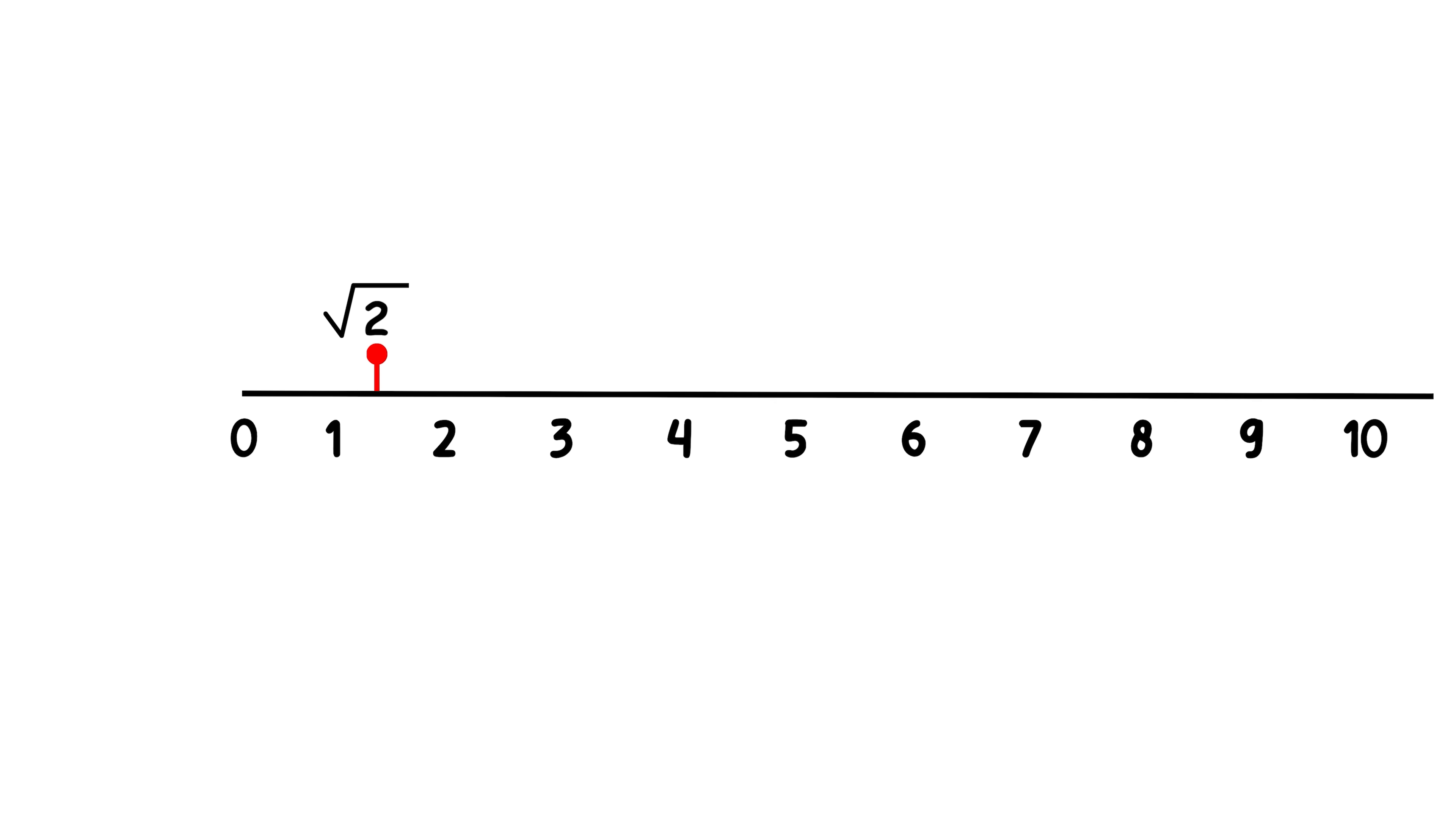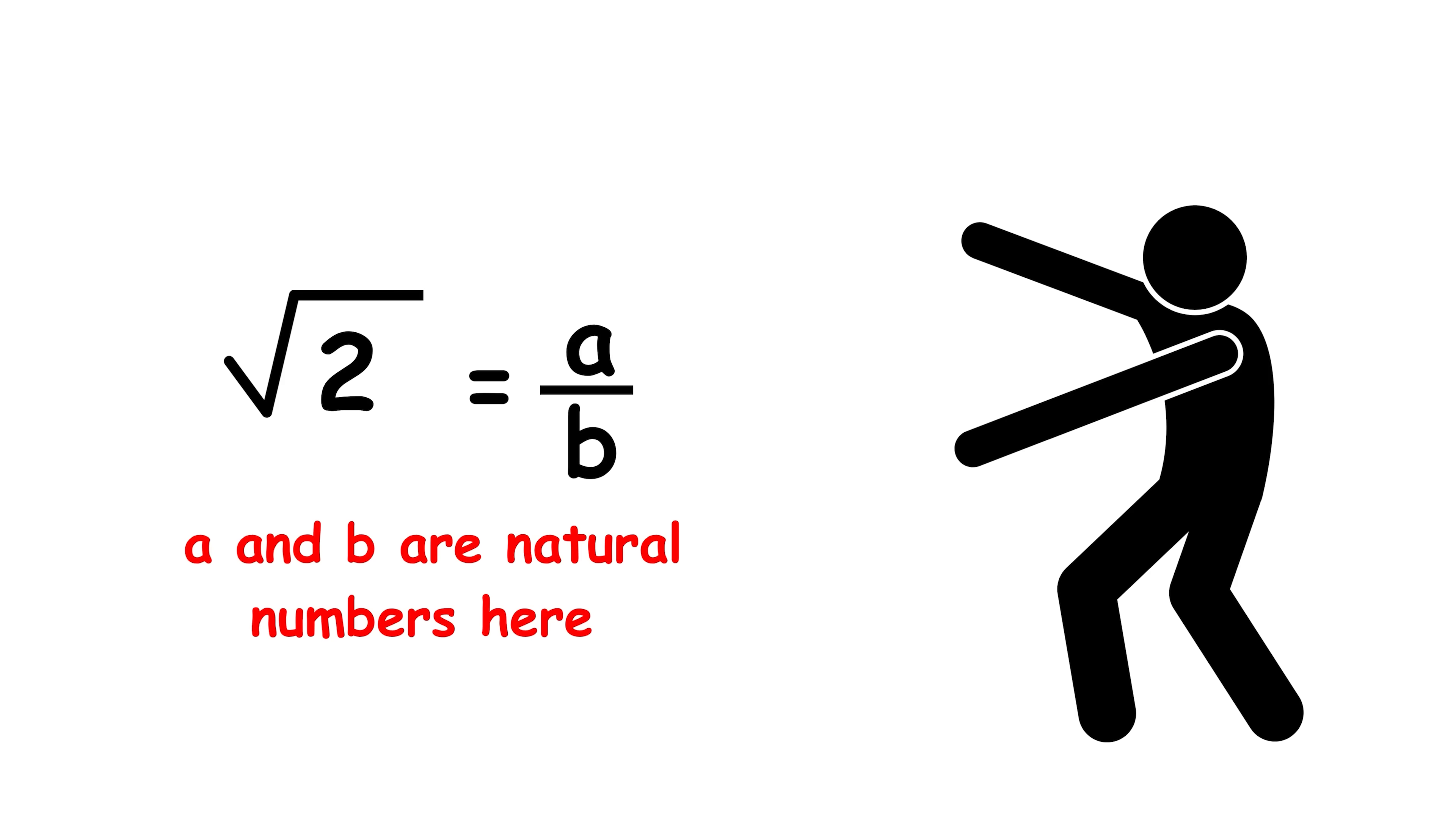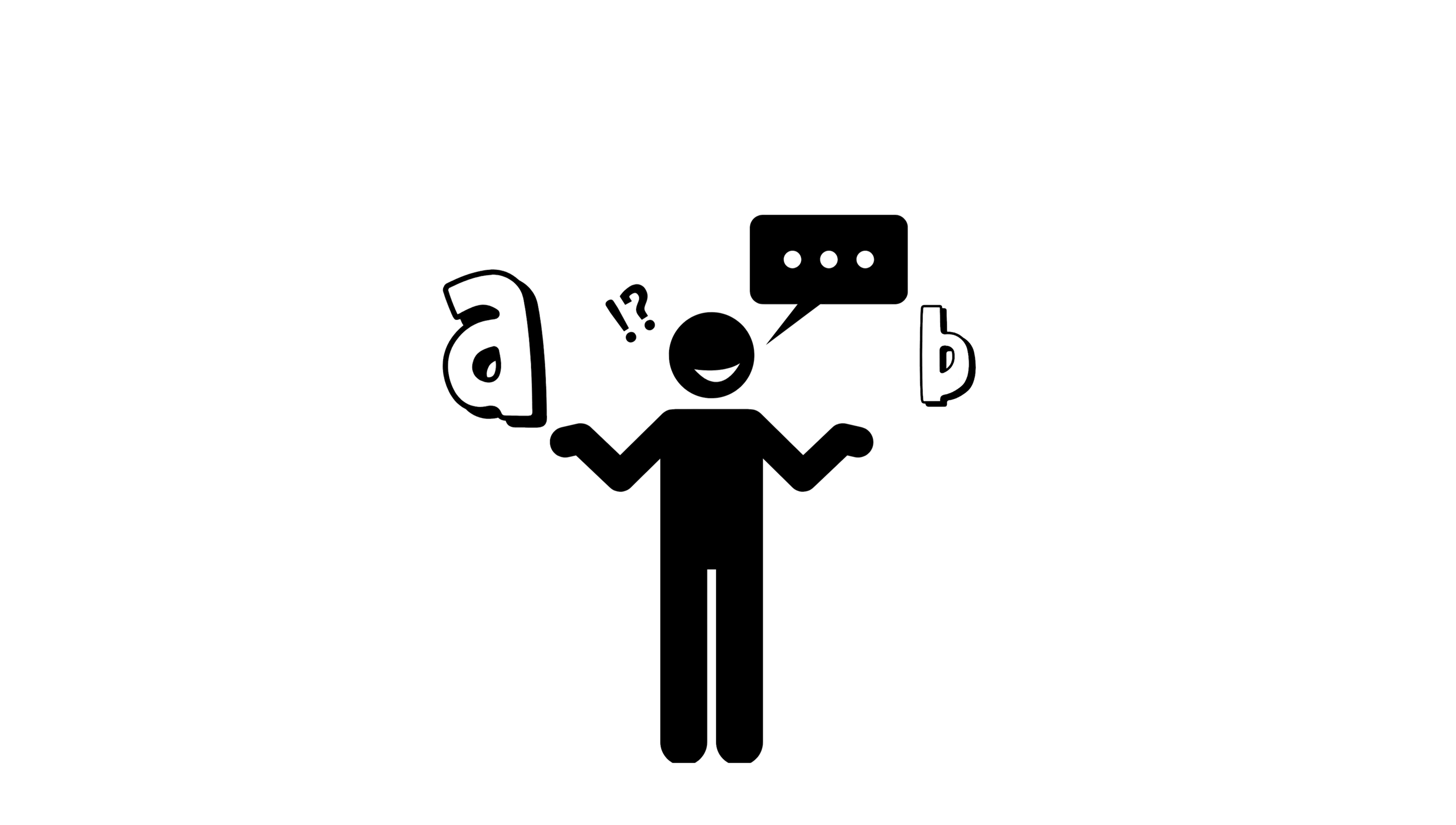Luckily, square root 2 is a positive number, and if a positive number can be represented as a ratio of integers, then it can be represented as a ratio of natural numbers. Also, we will remove the requirement that a and b are co-prime, as it is not necessary now. From here, the algebra is mostly the same as before.